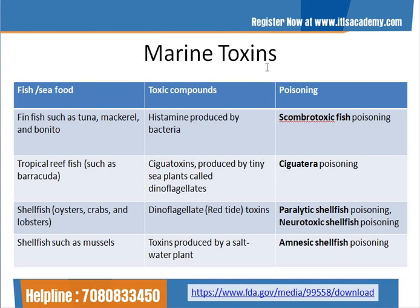Marine toxins are found in different seafoods. Examples include histamine, produced by bacteria which grow on fish — when these fish are consumed the consumer suffers from fish poisoning. Another example is scombrotoxic fish. Ciguatera poisoning is caused by ciguatoxins produced by tiny sea plants called dinoflagellates. These dinoflagellates produce a number of toxic compounds, resulting in different types of poisoning.